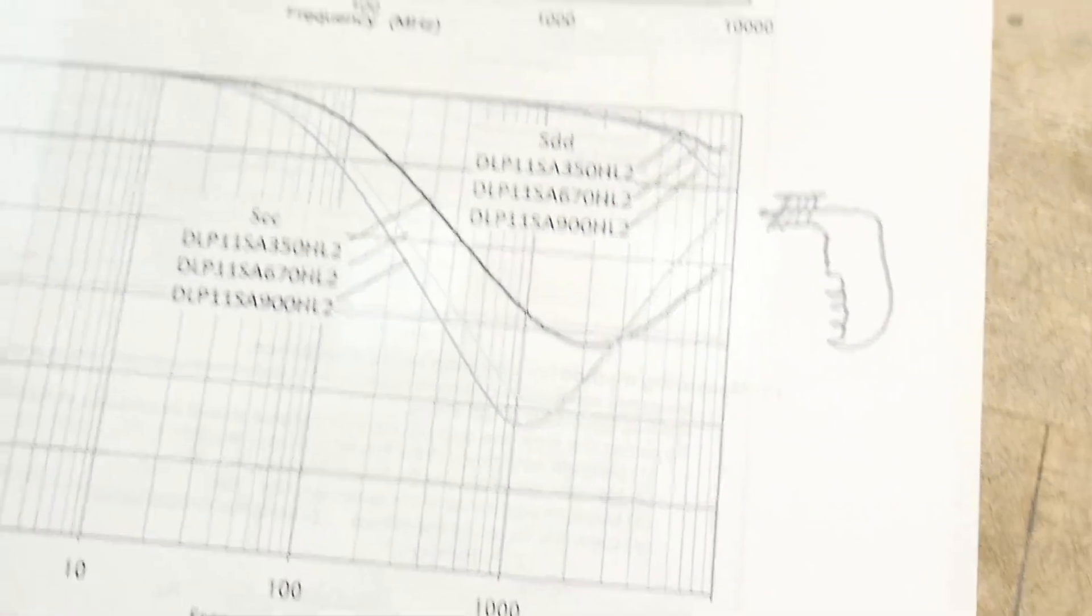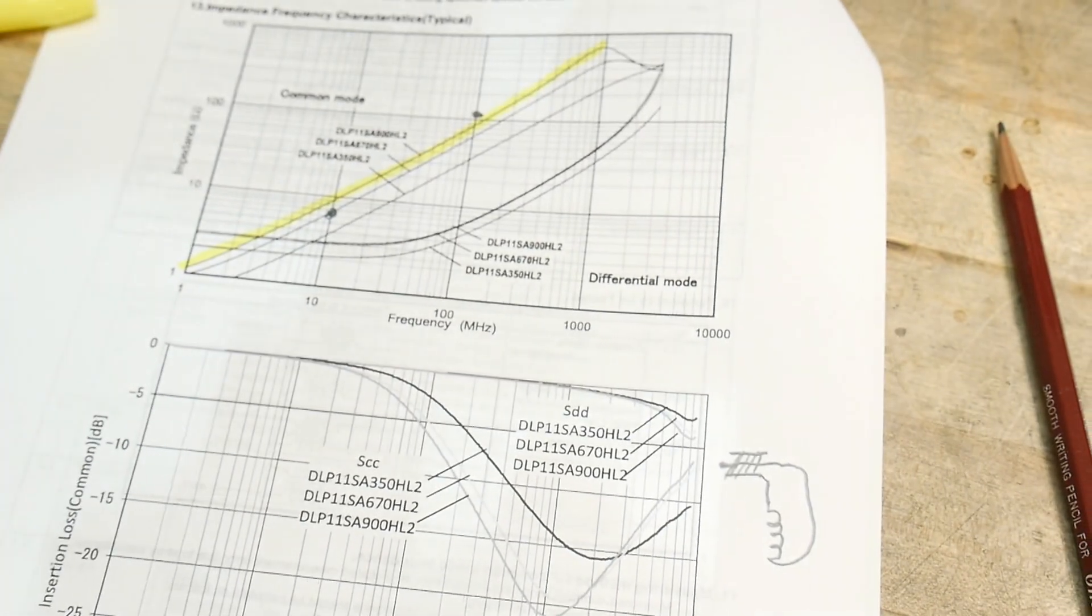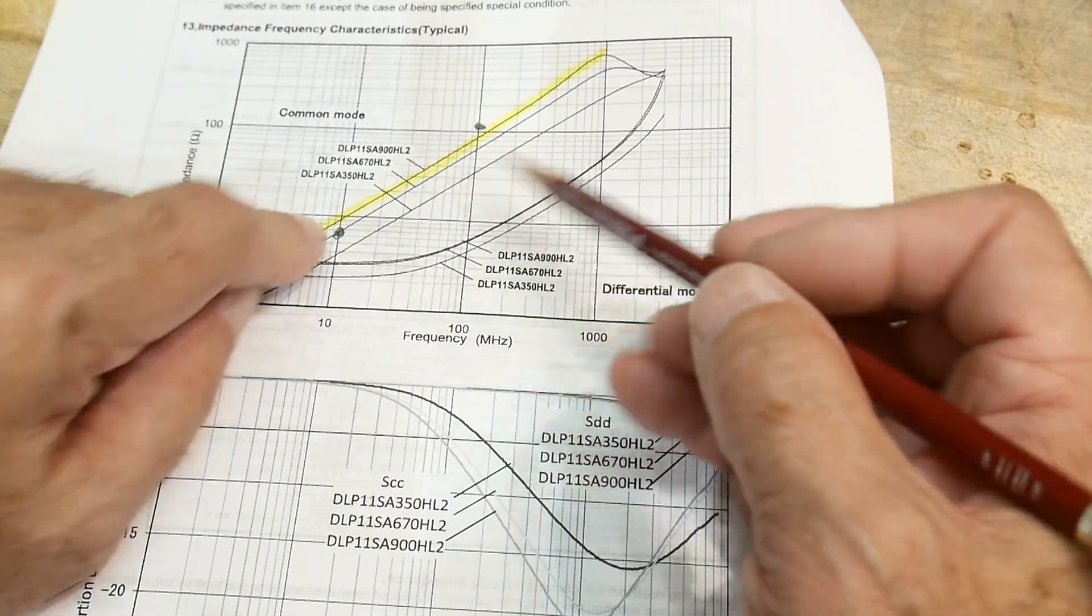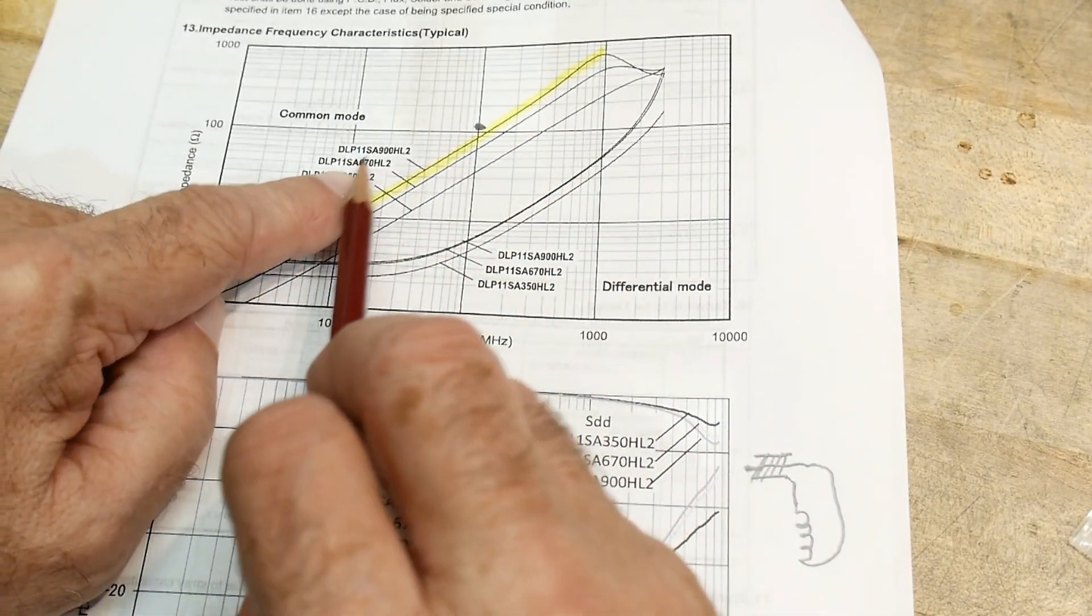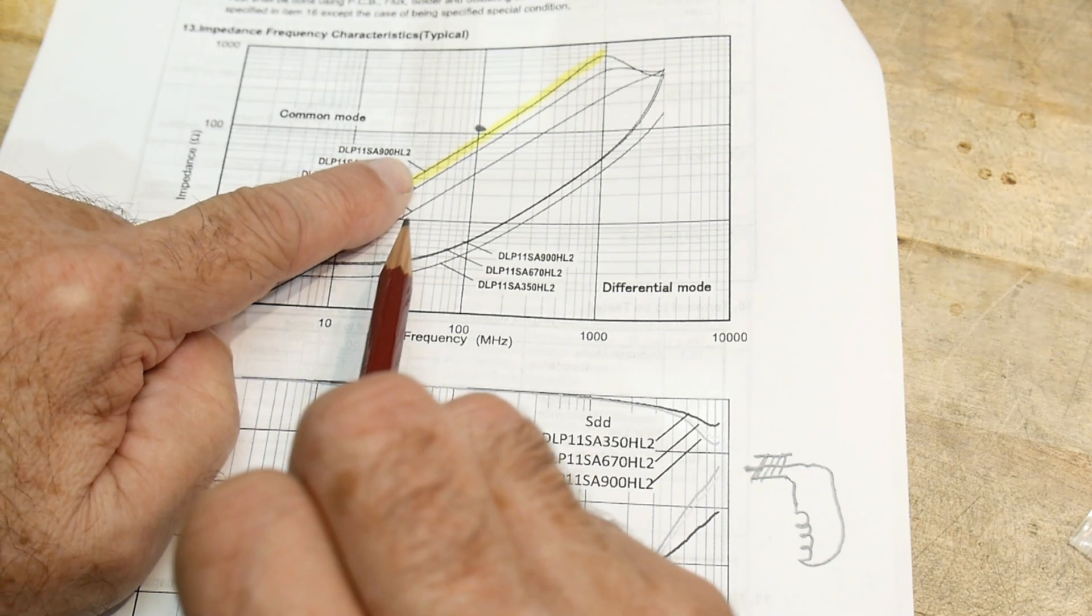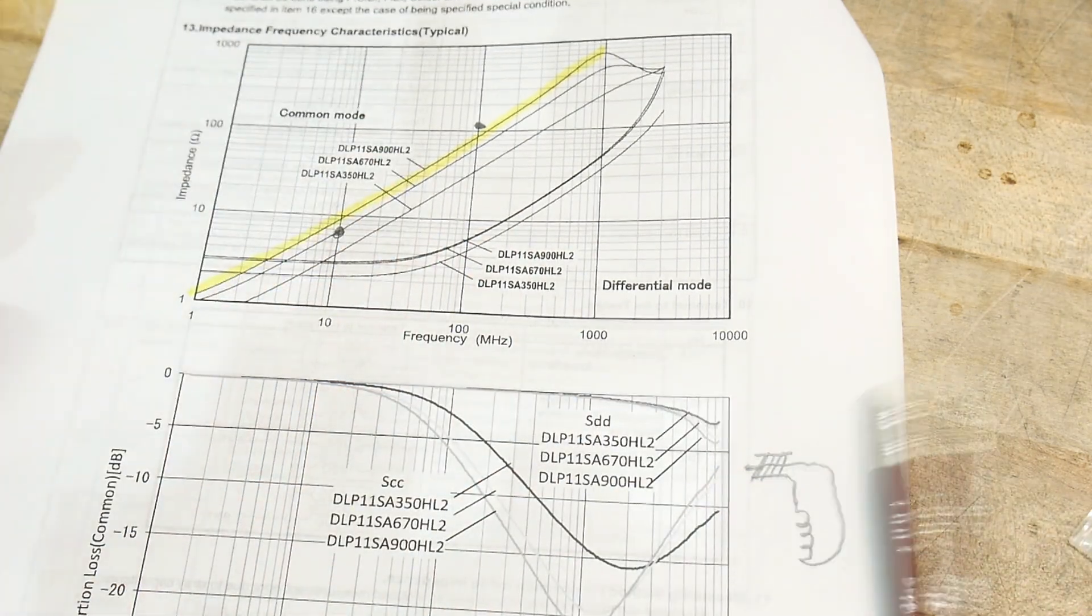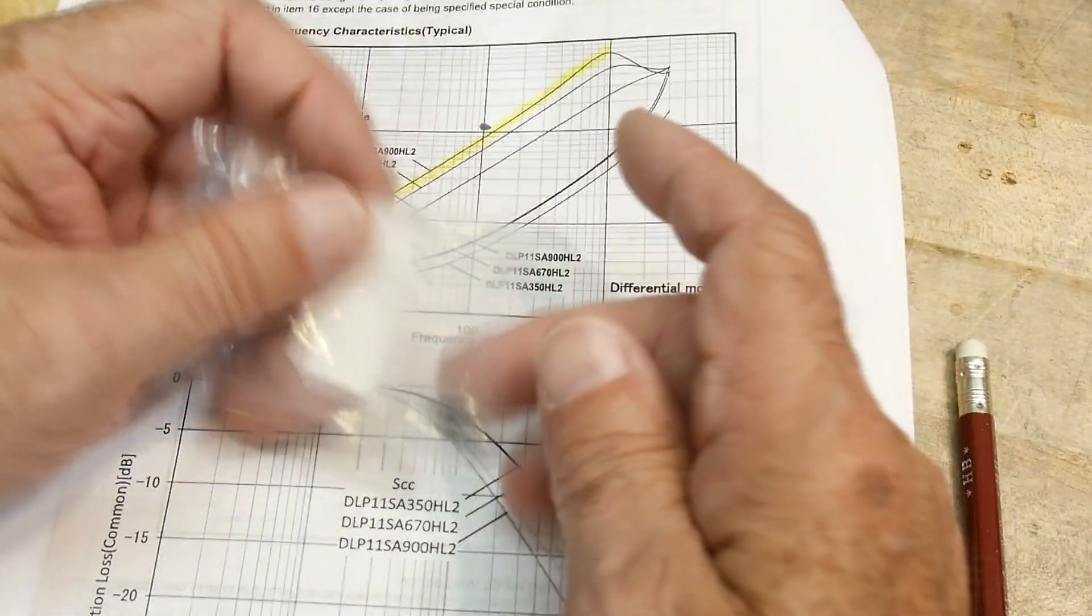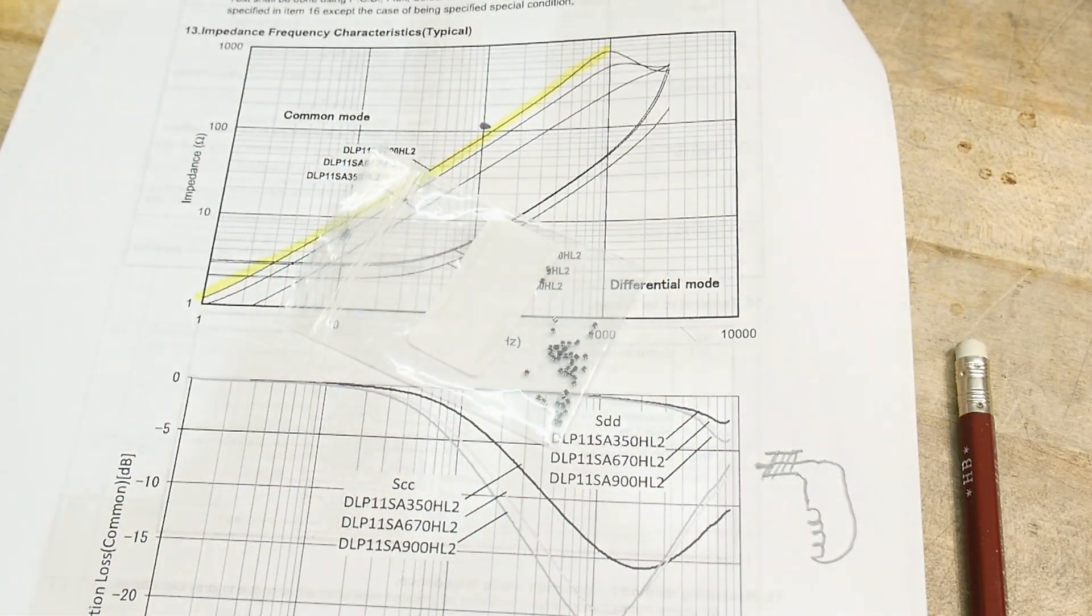So there you go. I've done a bunch of videos on all those things. So take a look at my channel, but yeah, that was chip of the day, a DLP11SA900HL2. And I don't know what I'm going to do with this. They're like the size of pepper. That's crazy.